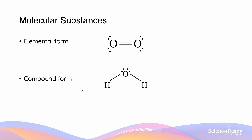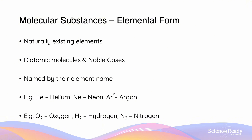Molecular substances are pure substances and can be divided into two groups: either the elemental form or the compound form. Here is an example of the element oxygen and the compound water. Molecular substances which are in elemental form are naturally existing elements. They consist of diatomic molecules as well as the monoatomic noble gases.